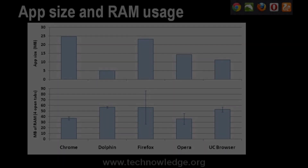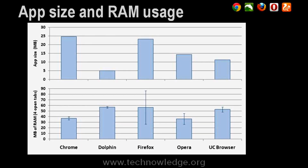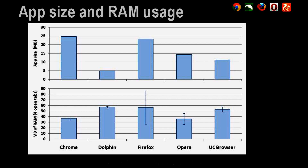Without further ado, I'm going to go straight into showing you the results. I've graphed them so they're easy to compare. This first slide shows the app size and also the amount of RAM used with four tabs or four websites open at the same time on each app.